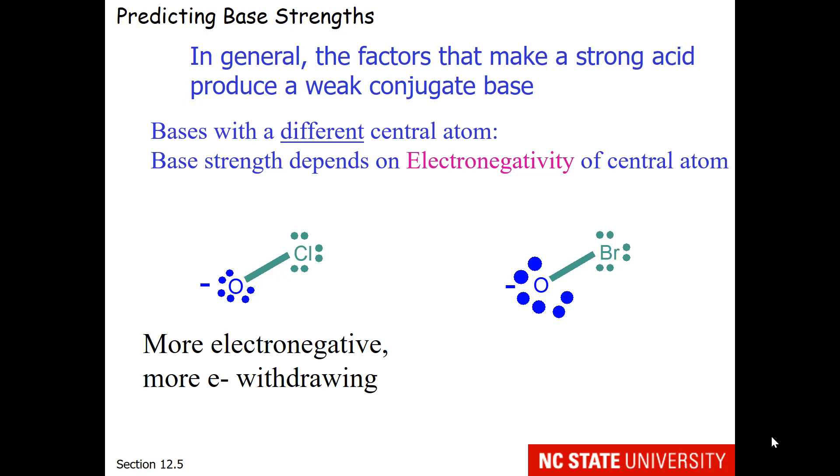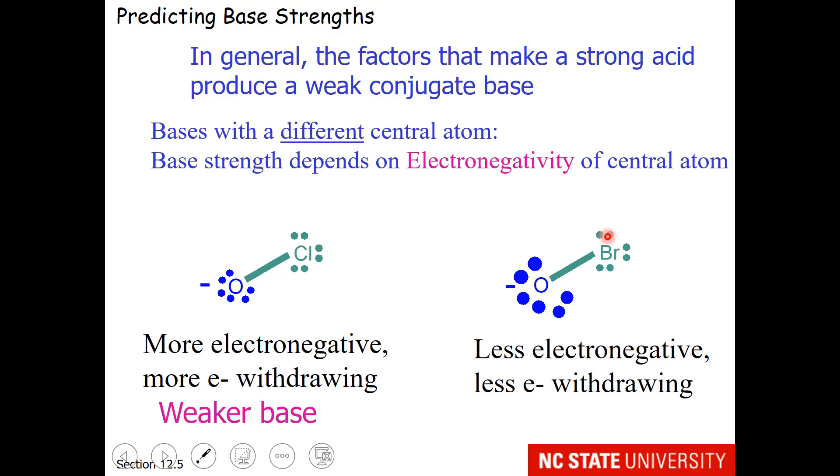The oxygen's job is to reach out and grab an electron. So what I've tried to show here is less electron density on the oxygen attached to the chlorine than the oxygen attached to the bromine. This would be because bromine is less electronegative and therefore less electron withdrawing. So the hypochlorite ion is a weaker base and the hypobromite ion is a stronger base.